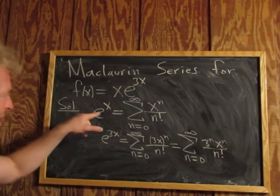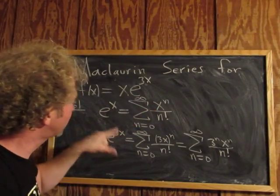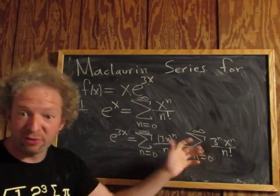We'll recap. What did we do? We started off by writing down the infinite series for e to the x, which most people know. Then we replaced x with 3x and then simplified. Really important to simplify.